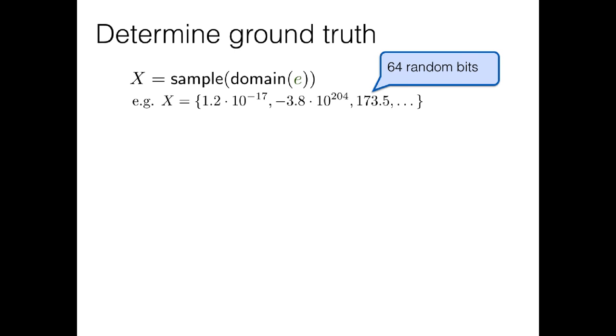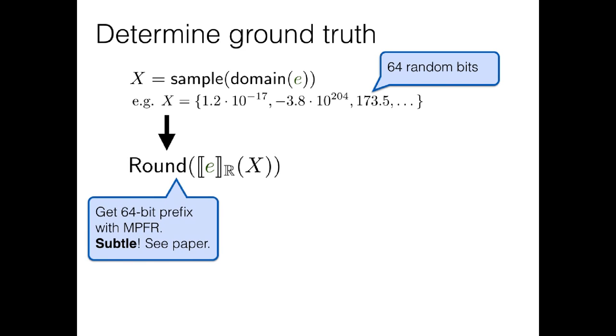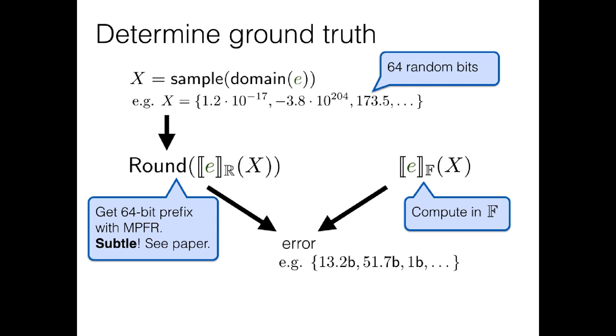Now that we have inputs to evaluate our expression on, we can compute the exact value that we want our program to have on these inputs using the arbitrary precision library like MPFR. I mentioned this is a little subtle. We need to find how many bits will suffice to get us an exact answer, and you can see our paper on how we do that. Now that we have these ground truth values, we can evaluate an arbitrary expression for its accuracy by just computing it in normal floating point arithmetic, and then comparing that to the ground truth values. We're going to use this as a subroutine throughout the rest of Herbie, because we're going to need to evaluate the accuracy of a lot of different candidate programs.